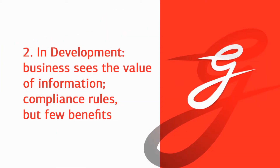The second maturity level is called In Development. On that level, the organization has understood the value of information governance. It has initiated the procedures required to achieve compliance, and some level of compliance has actually been achieved. However, no benefits are being received on this level — costs still outweigh the benefits.